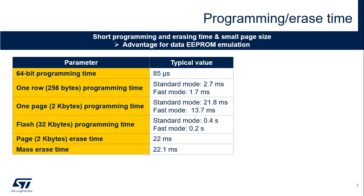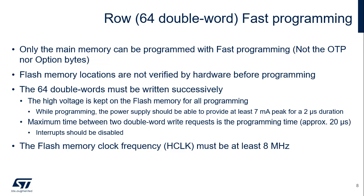Mass erase time — meaning a 32 kilobyte erase operation — approximately takes the same time as a page erase. In fast programming, 256 consecutive bytes are programmed instead of 8-byte double words located anywhere in the main flash memory. 8-byte programming is more reliable due to the verification step. Note that the maximum time between two consecutive double words is around 20 microseconds. If a second double word arrives after this delay, fast programming is aborted and a flag is set. Consequently, interrupts should be disabled to make sure that this delay is not exceeded.